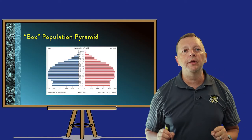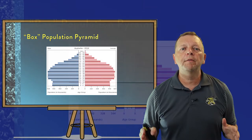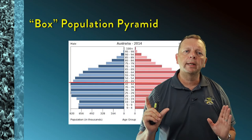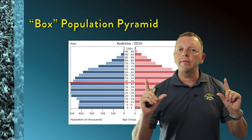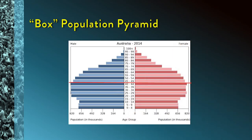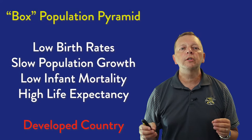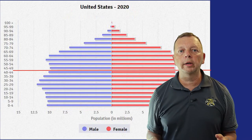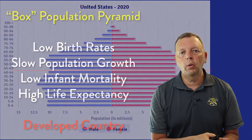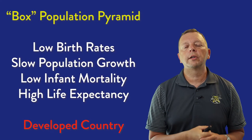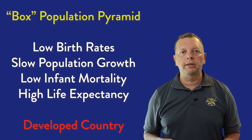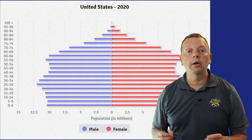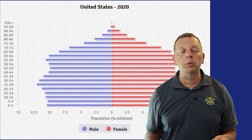Then we have what we call the box population pyramid, where the population above 45 years old and the population below 45 years old is about the same. A box population pyramid is characteristic of a developed nation such as the United States or Australia. Here we find a low infant mortality rate, a low population growth rate, and long life expectancy — all indicators of a developed or rich country.